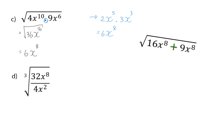In D we now have to divide inside the cube root. When dividing we end up with 8x to the power of 6. Now we can determine the cube root of 8, which is 2, and the cube root of x to the power of 6 is determined by dividing the exponent by 3, giving x to the power of 2.